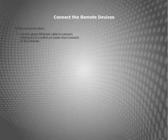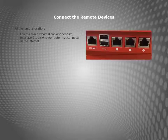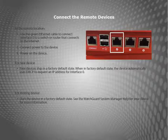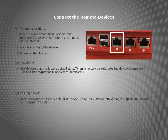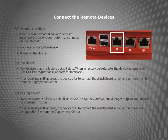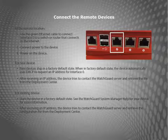To connect your device, someone at the remote site must use the included green ethernet cable to connect interface 0 to a switch or router that connects to the internet. Connect power to the device and then power it on. When the device starts in a factory default state, it automatically uses DHCP to request an IP address for interface 0. After the device receives an IP address, it tries to contact the WatchGuard server to see if a configuration file from the Deployment Center is available, then restarts and contacts the management server specified in the basic configuration file.